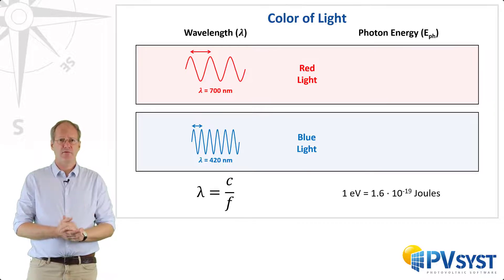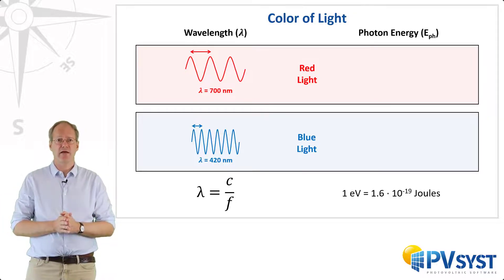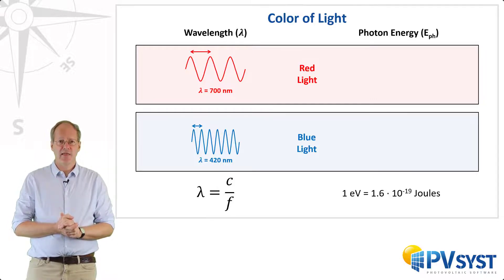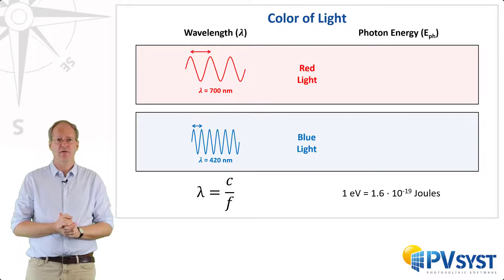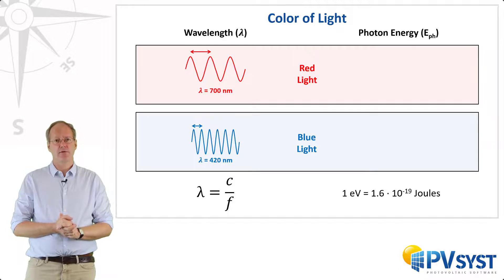An electron volt is the amount of kinetic energy gained by a single electron accelerating from rest through an electrical potential difference of 1 volt in vacuum. This is a very small energy quantity, corresponding to 1.6 times 10 to the minus 19 joules. That is, 1.6 tenths of a billionth of a billionth of a joule. And 1 joule is 0.28 millionth of a kilowatt hour.